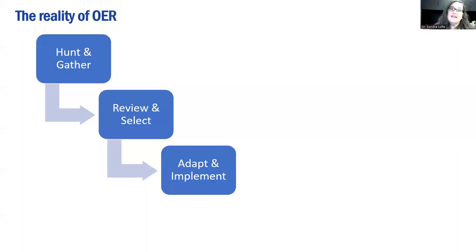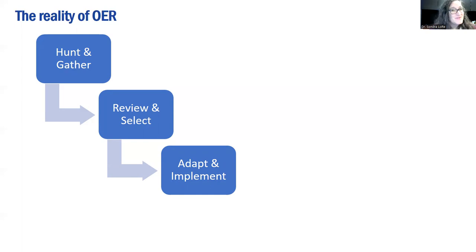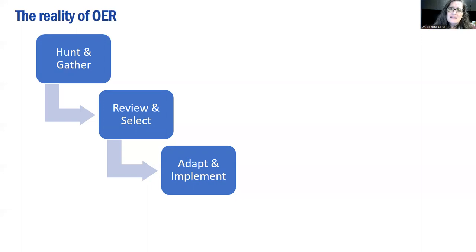This is the part I feel is really missing from the Five R's: we adapt before we try, not only after. When we find something we think is a great lesson, we need to make some adjustments right away, because it would be very unlikely to find something that's absolutely perfect in terms of timeline and assessment. We often find things where, say, a class meets four times a week for 12 weeks, but my class is seven weeks, meeting two times in person and once online — so how am I going to adapt it?